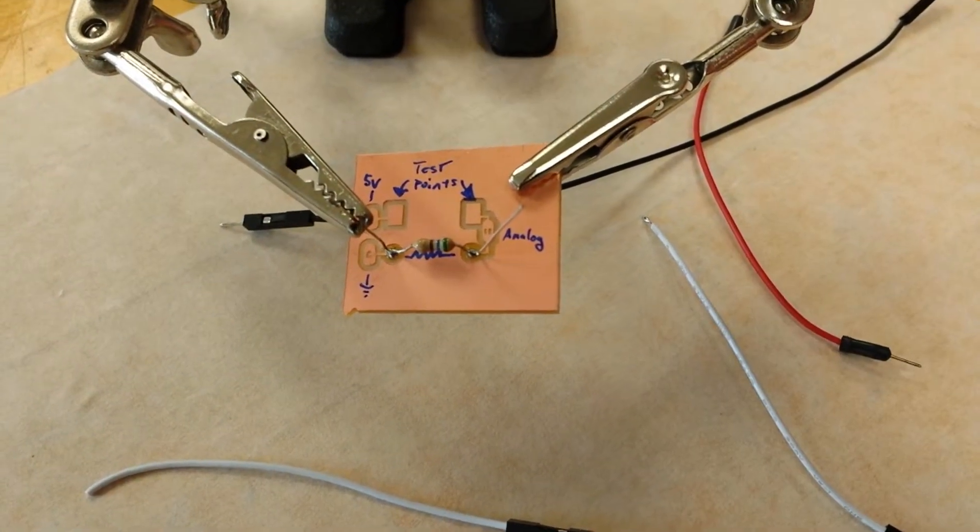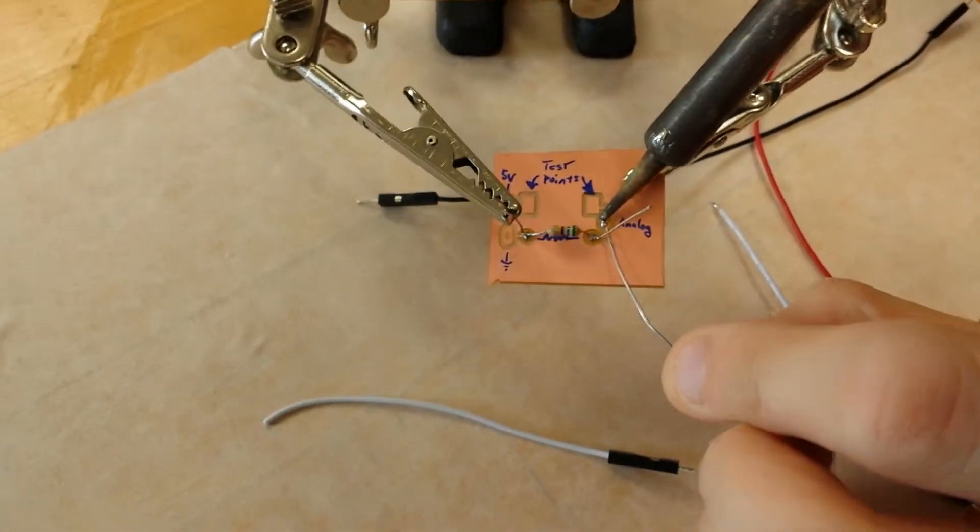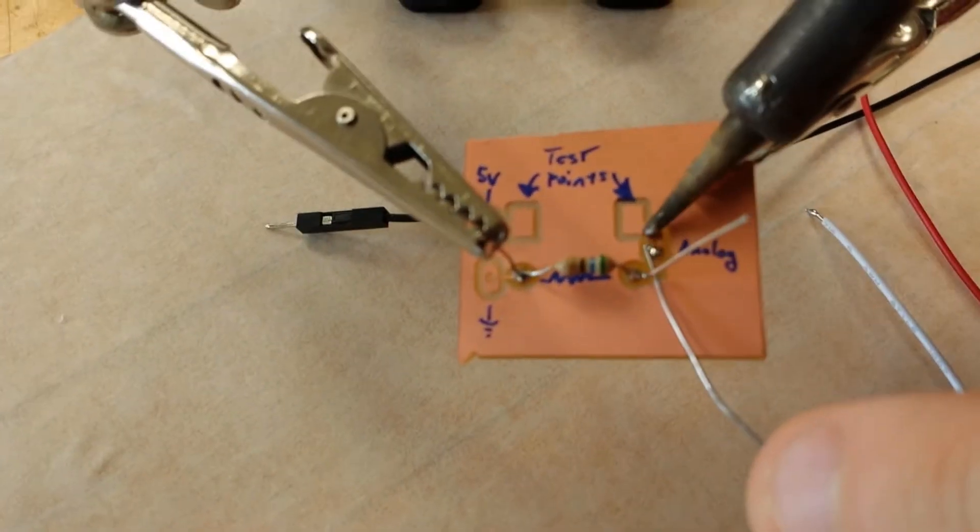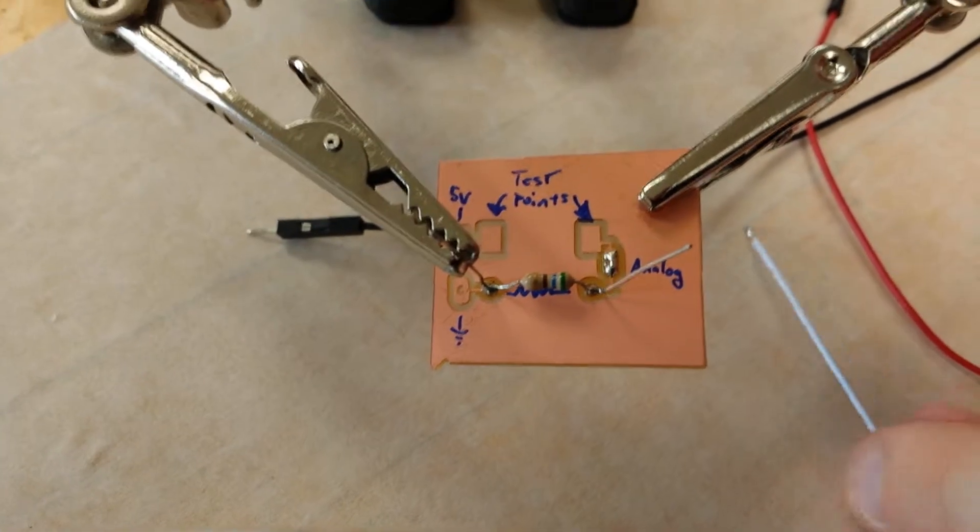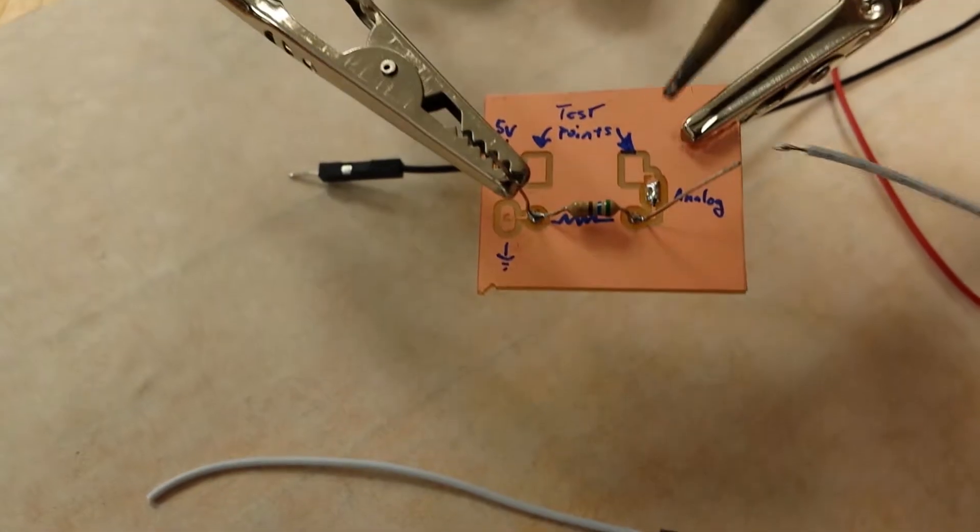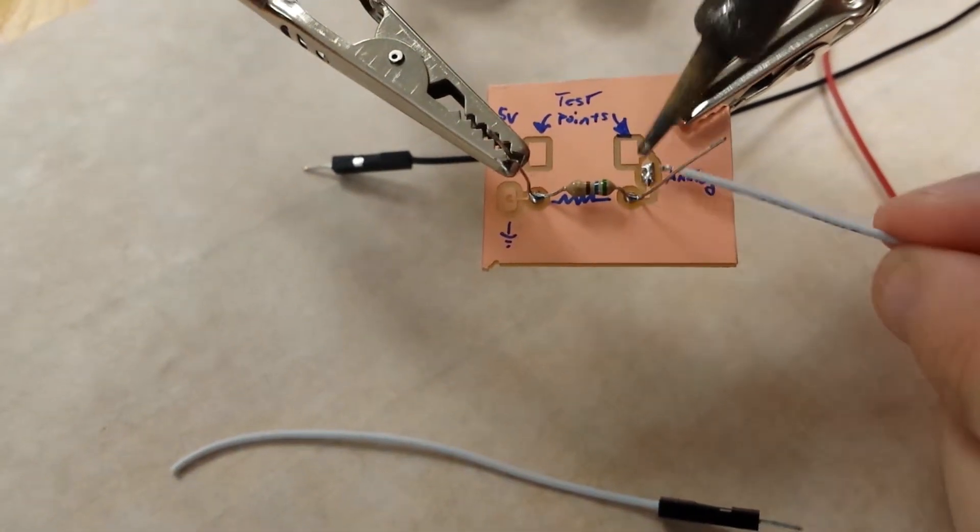So what you can do to make sure there's a good connection is put a tiny amount of solder directly on the pad already. And then now that I've tinned my wire, I have some solder here, I have some solder there. I just touch them together and heat them up until they both melt.